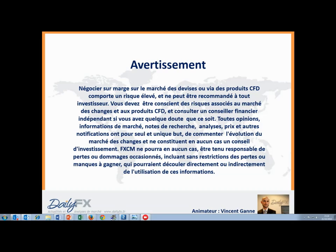Aujourd'hui le tableau est assez complexe : le dollar américain continue de glissoter, une espèce de consolidation légèrement baissière en place depuis deux semaines. Le GBP/USD est fort depuis la semaine dernière. L'AUD et le NZD bénéficient des chiffres du PIB chinois la nuit dernière, sans mouvement hyper impulsif. L'euro-dollar semble évoluer en range.